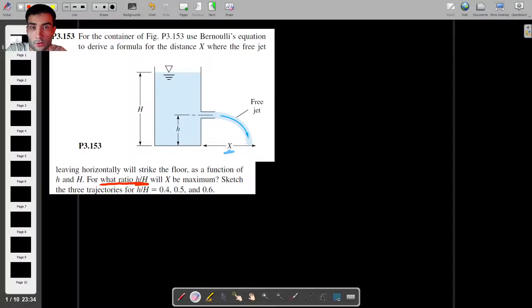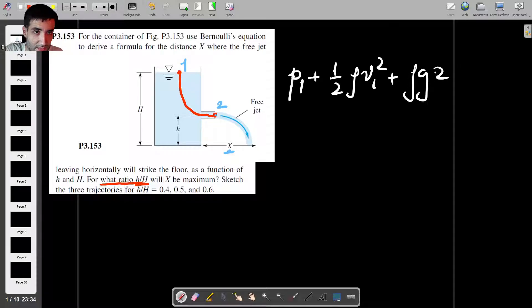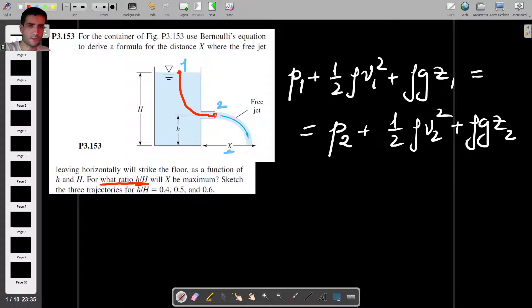First of all, we can see that this satisfies all Bernoulli assumptions, which means that we can take a streamline from the surface and follow it into this orifice and apply Bernoulli between this point. Let's call this point one and this would be point two. The reason why we picked those two points will become apparent in a second.